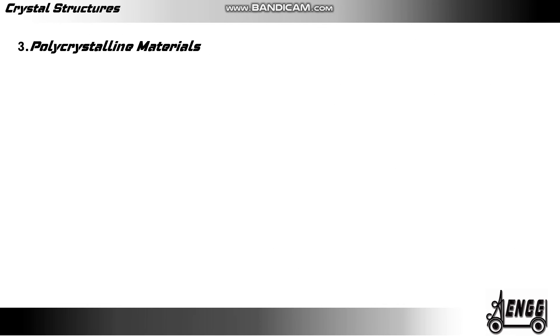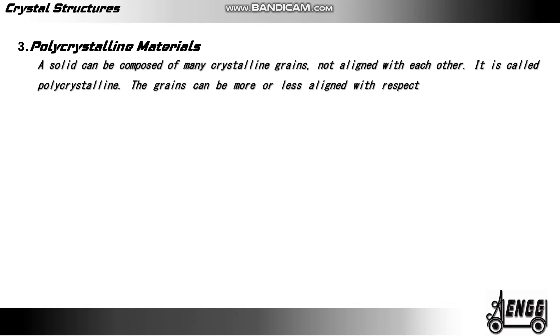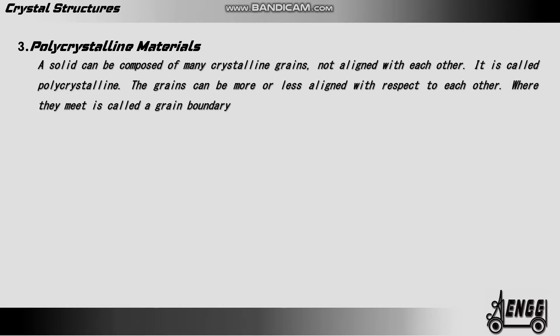Polycrystalline materials. A solid can be composed of many crystalline grains not aligned with each other — it is called polycrystalline. The grains can be more or less aligned with respect to each other, and where they meet is called a grain boundary.